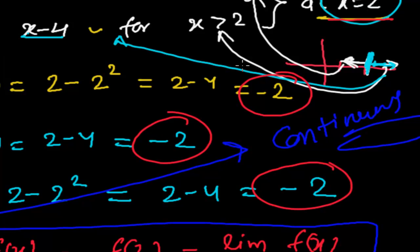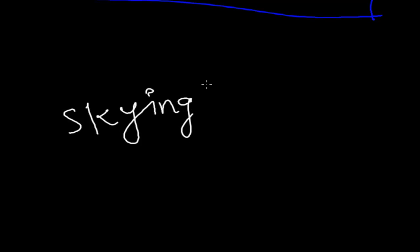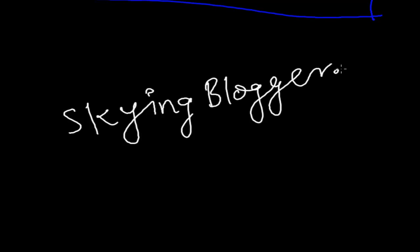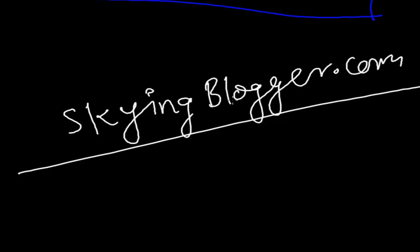So this is how we check continuity: find the left-hand limit, right-hand limit, and the value of the function — if all are equal, it's continuous; if not, it's discontinuous. In the next video we'll do lots of problems. I also suggest you visit my website where I've listed many problems related to limits and continuity. Try to solve them, and if you face any difficulty, comment or mail me. See you in the next video, bye bye.